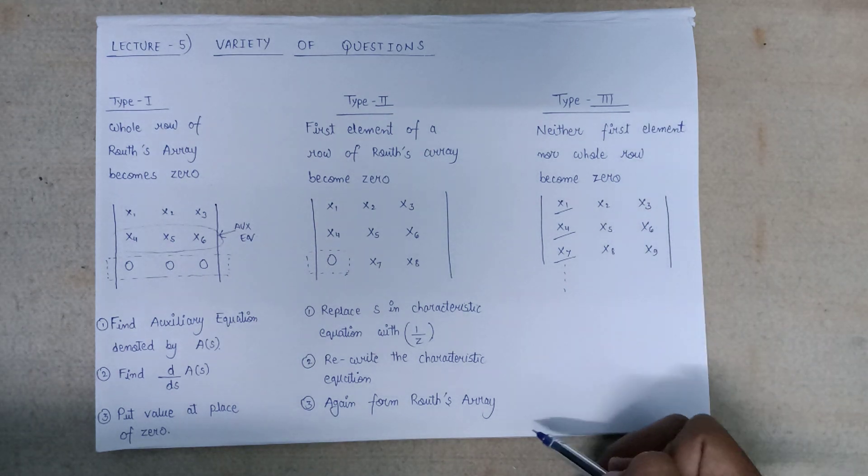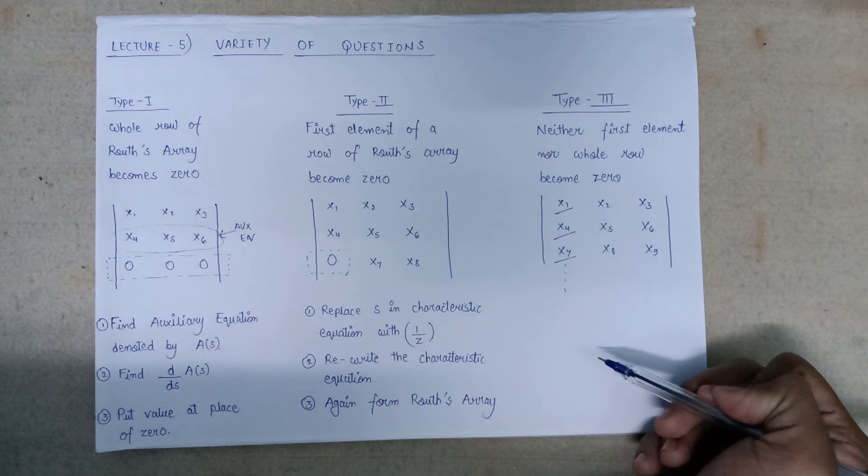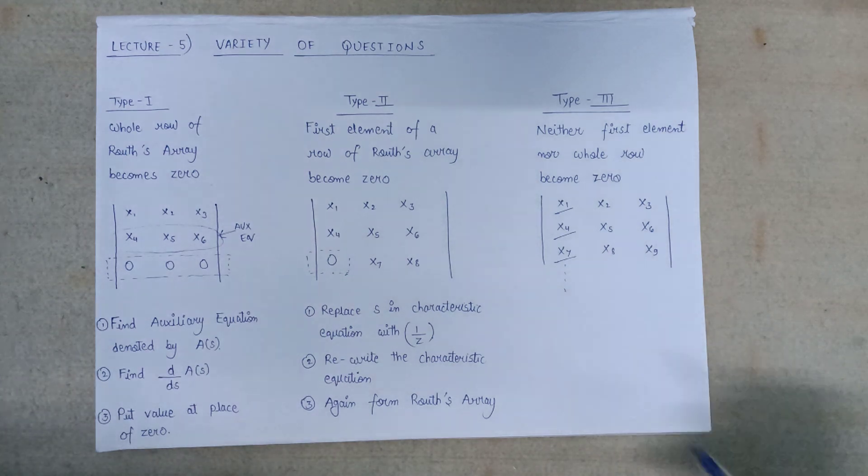In this way, we are going to check whether the system given to us is stable or not based on these three types of categories. Thank you.